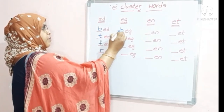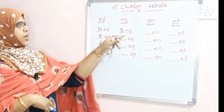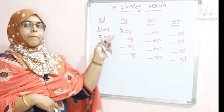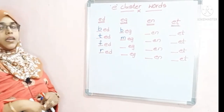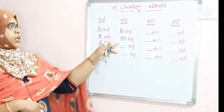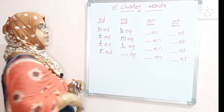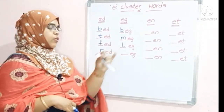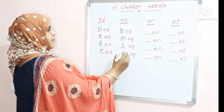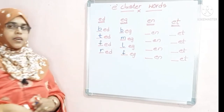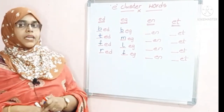Now if you are writing letter B here, the sound of B is B — B + egg becomes 'beg'. This is letter M, the sound of M is M — M + egg becomes 'meg'. This is letter L, the sound of L is L — L + egg becomes 'leg'. This is letter F, the sound of F is F — F + egg becomes 'feg'.